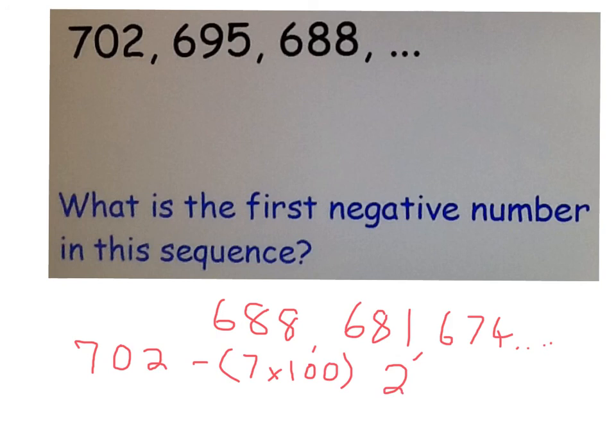Number 2 will be in the sequence. And then from 2, I'll just need to take away another 7 and that will give me my solution, which of course will be -5.